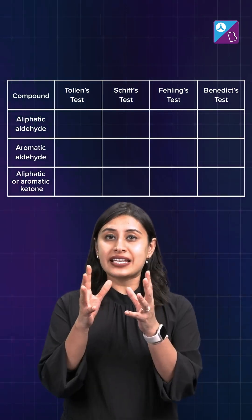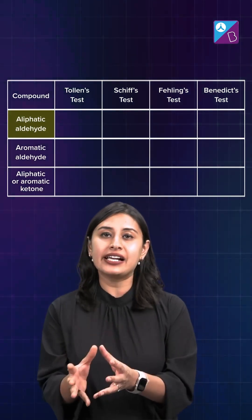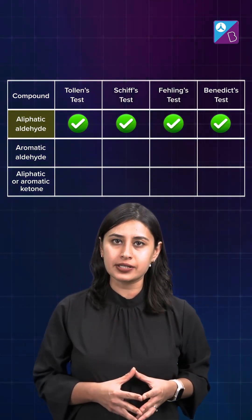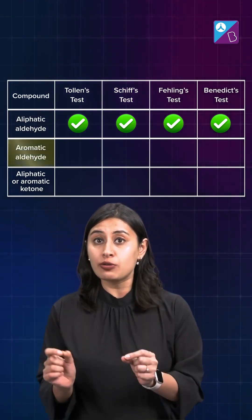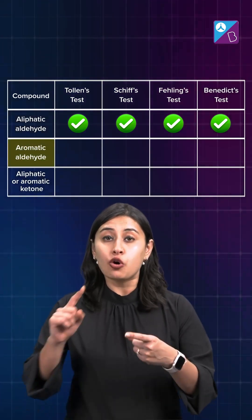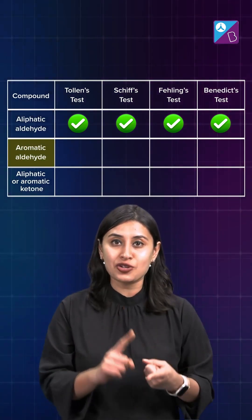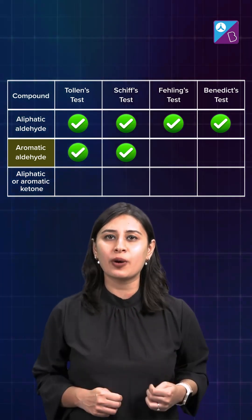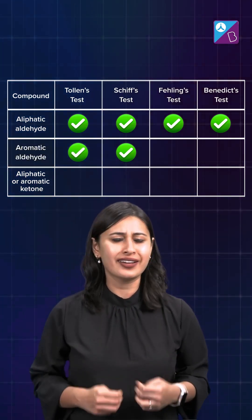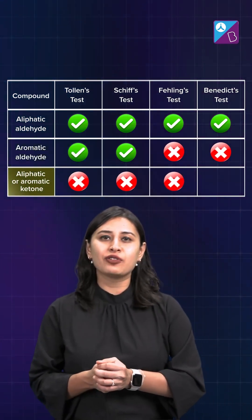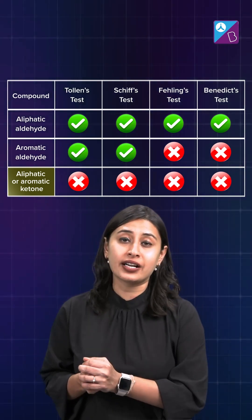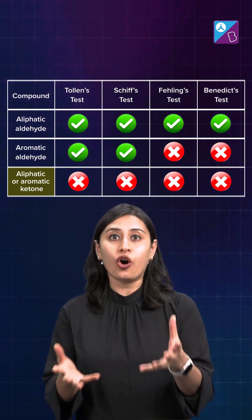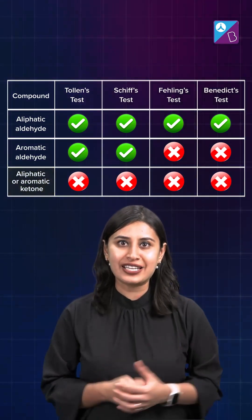When it comes to testing aliphatic aldehyde, all four of them give a positive result. But if you talk about aromatic aldehyde, only Schiff's and Tollens' test will give you a positive result. And none of them will give you a positive result for aliphatic ketone or an aromatic ketone.